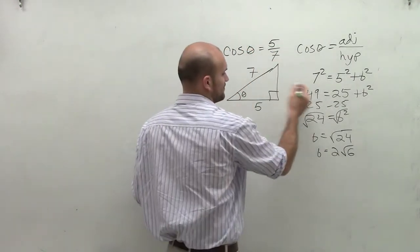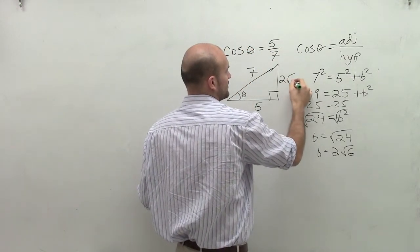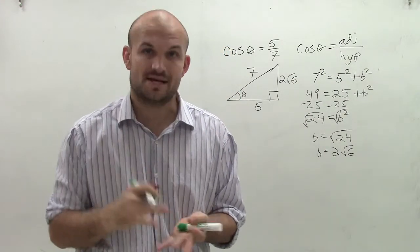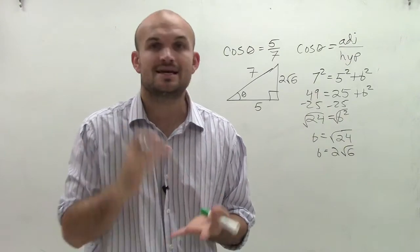All right? So therefore, the second leg is 2 squared of 6. Now, what actually the question is asking us to do is evaluate for sine, cosine, tangent, cosecant, secant, and cotangent.